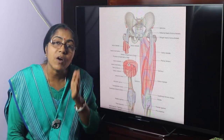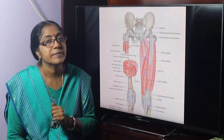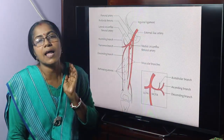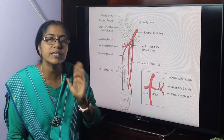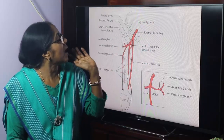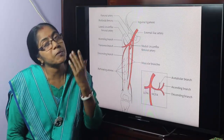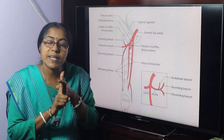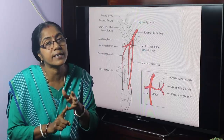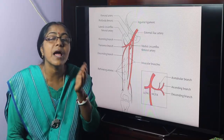The femoral artery is the continuation of the external iliac artery. It passes below the inguinal ligament. At the midpoint of the inguinal ligament it is called the femoral artery. The femoral artery gives superficial branches — superficial circumflex iliac, superficial epigastric, and superficial external pudendal arteries — and deep branches: deep external pudendal and arteria profunda femoris.